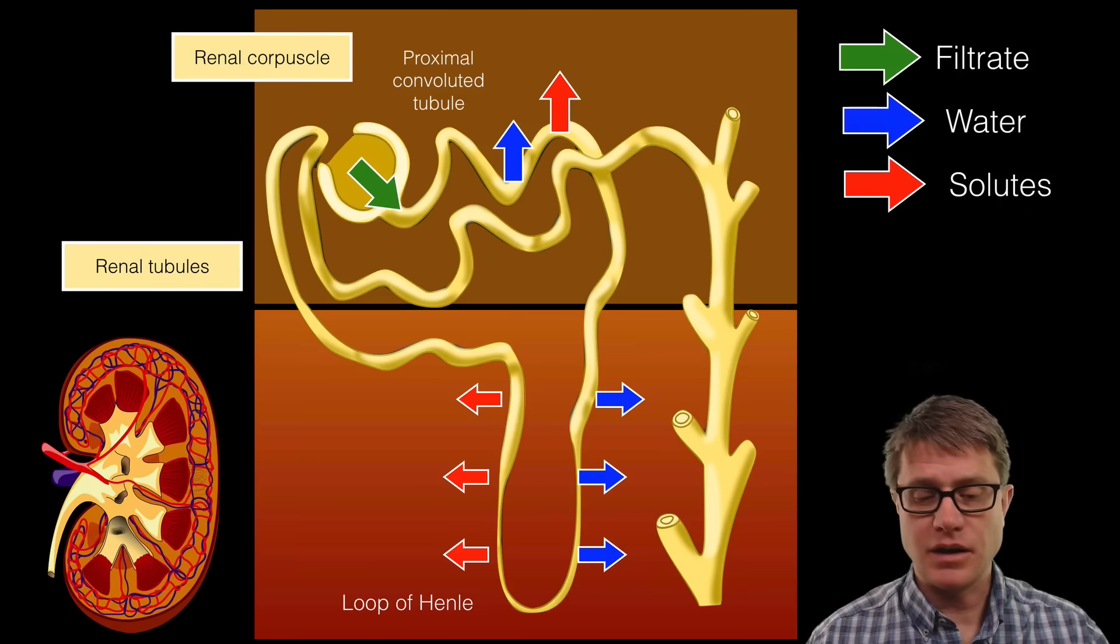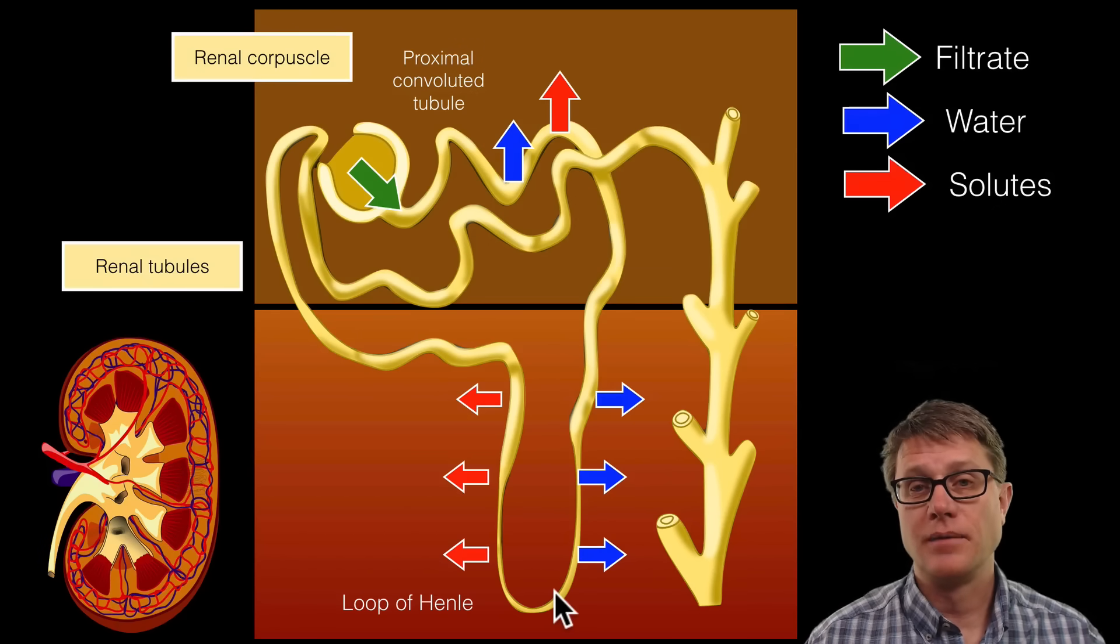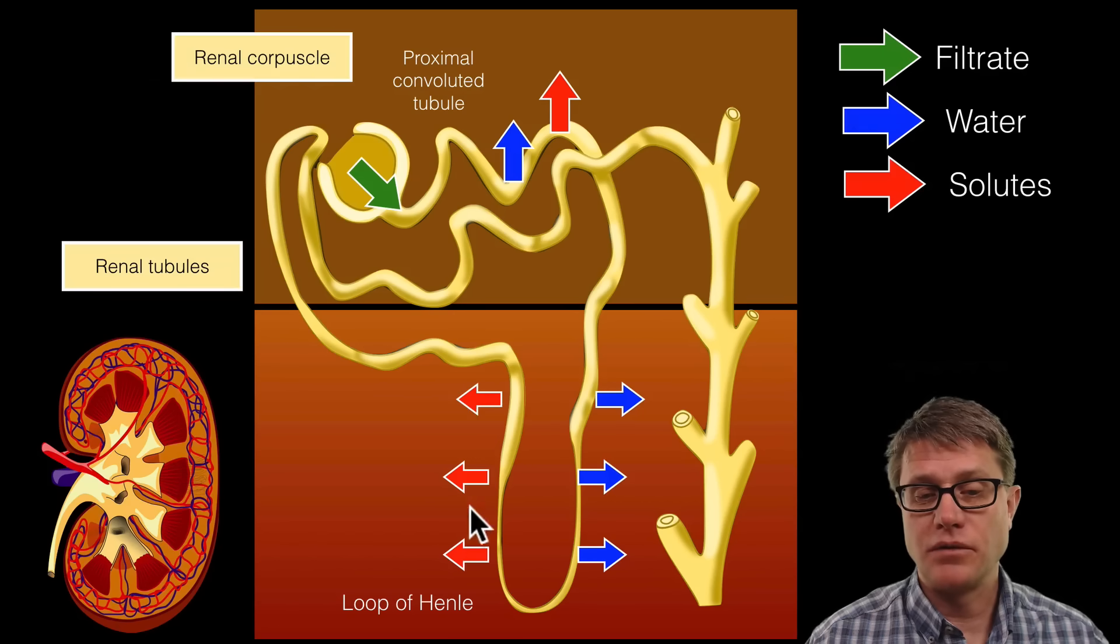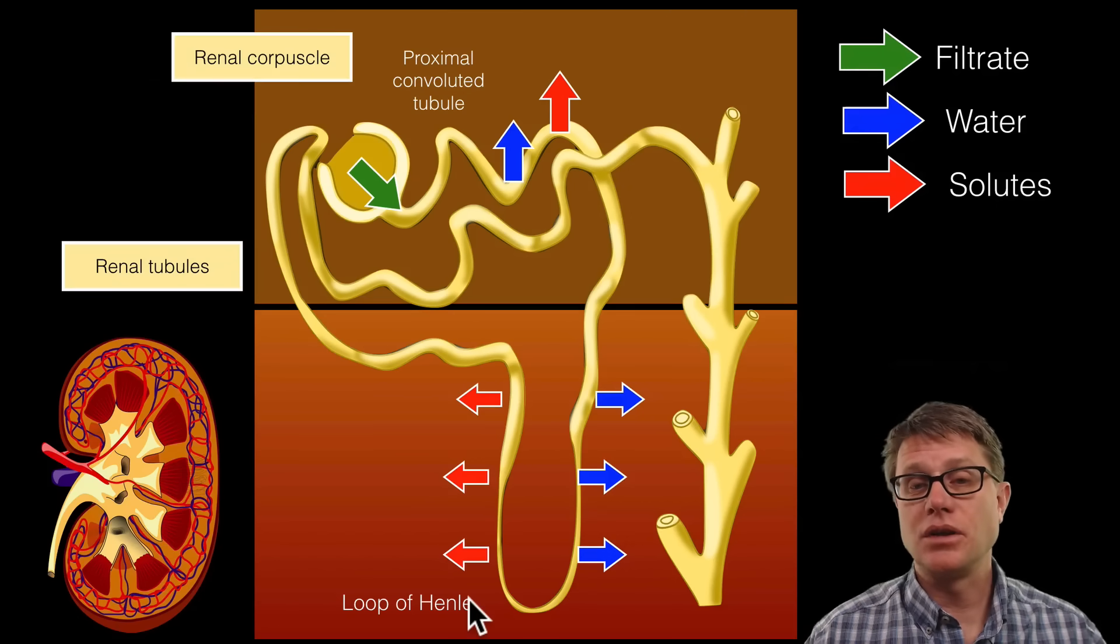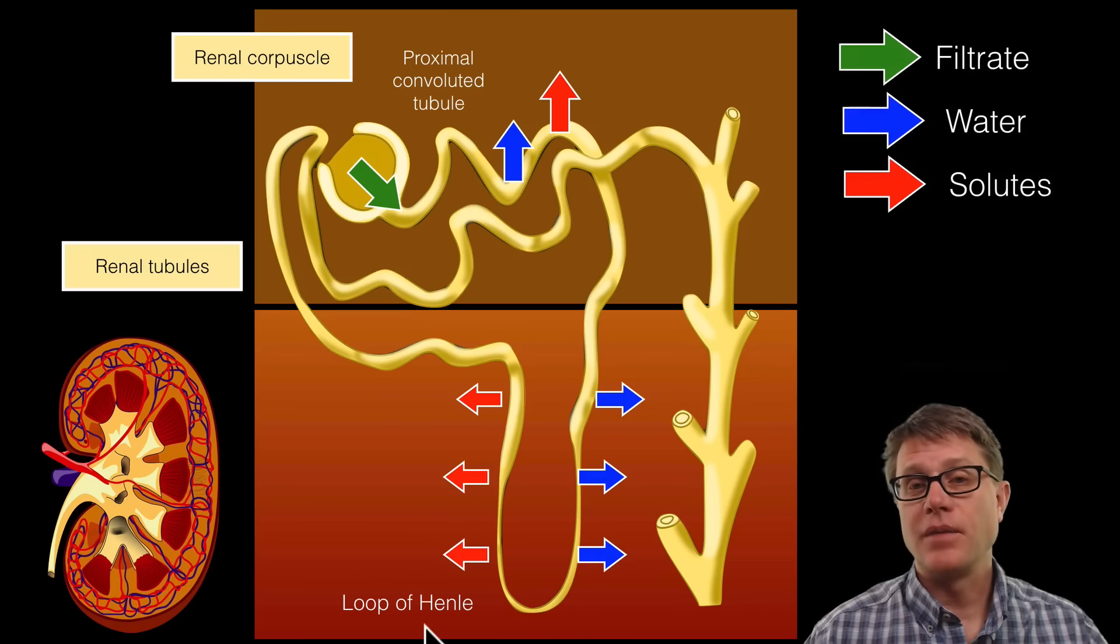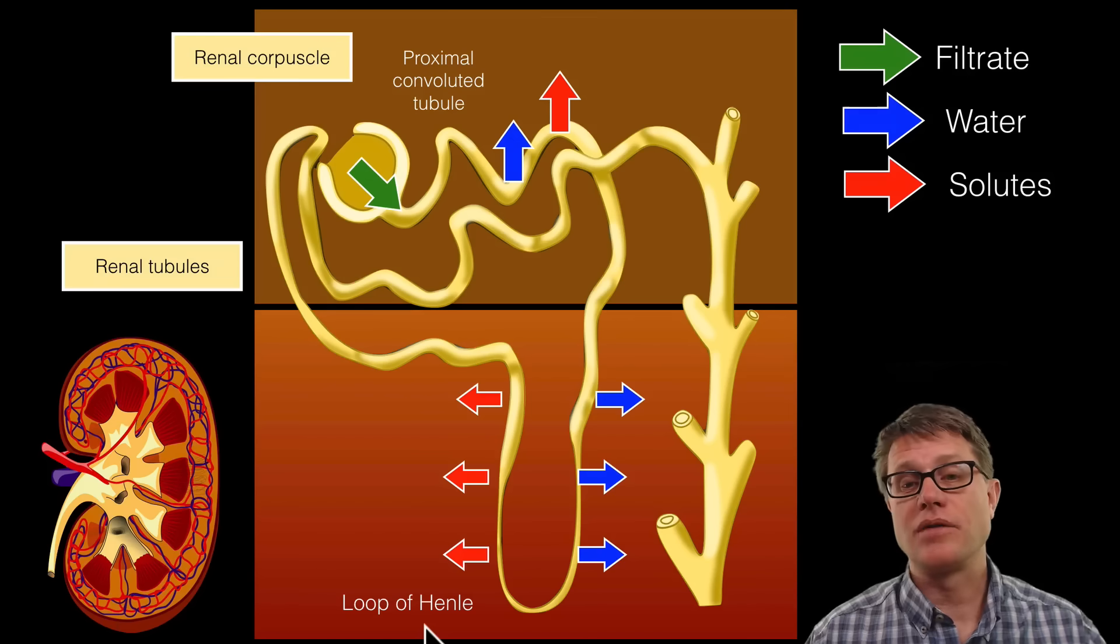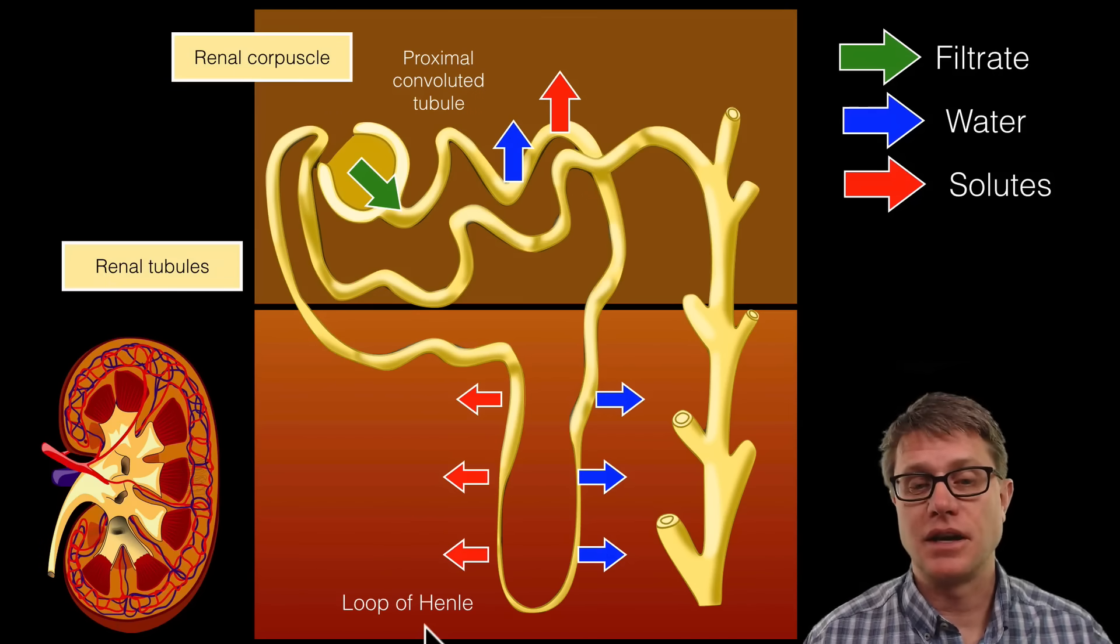As we go down into the loop of Henle, we've entered into the renal medulla. If you think about what's going on as we move farther and farther down, we've set up a counter current exchange. We're increasing the salt levels as we move farther down into the renal medulla. That makes it easier to take back more water in the descending limb of the loop of Henle and also in the collecting duct.